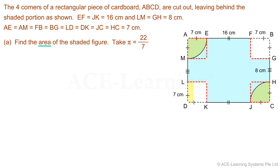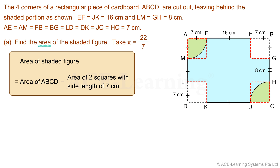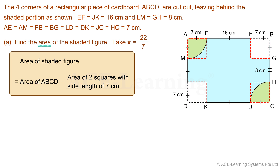Now we have an unshaded square of 7 cm at the corner of LDK. Let's make some observations on the rearranged figure. To find the area of the shaded figure, we can take the area of rectangle ABCD and subtract from it the area of this square as well as the area of this square. Now that we have an idea on how to find the area of the shaded figure, let's proceed to the next step.